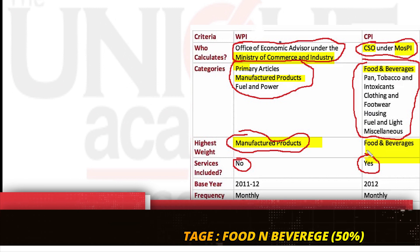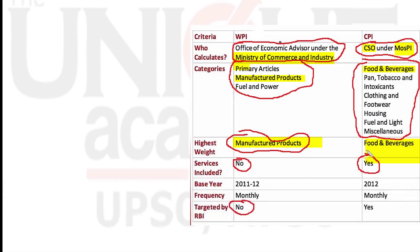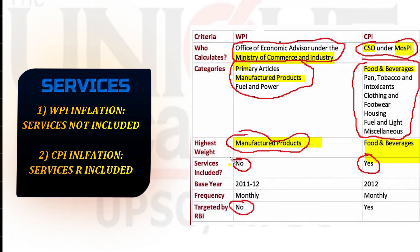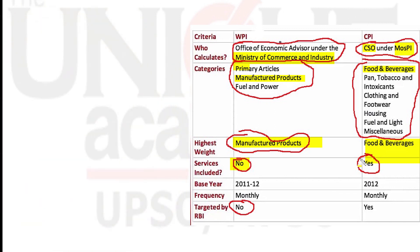An important fact: services are NOT included when calculating WPI inflation, but services ARE included when calculating CPI inflation. Regarding base year, 2011-12 is the base year for WPI and 2012 is the base year for CPI. The inflation target of maintaining inflation between 2 to 6% is calculated via CPI.